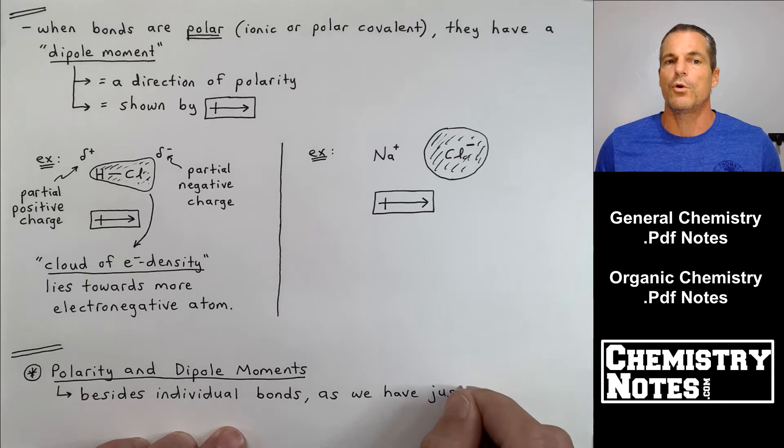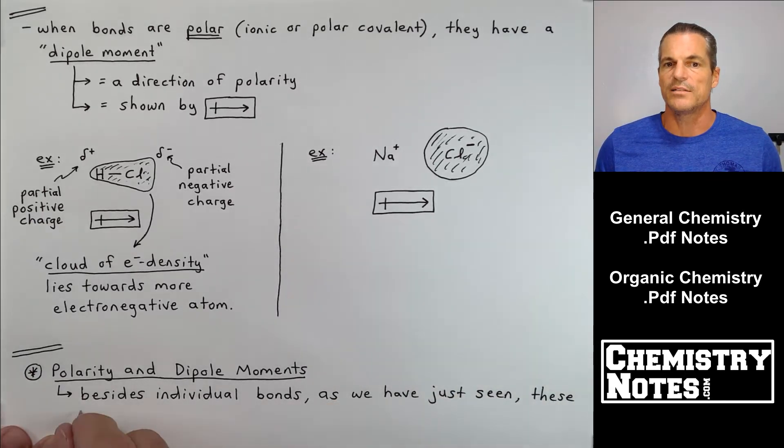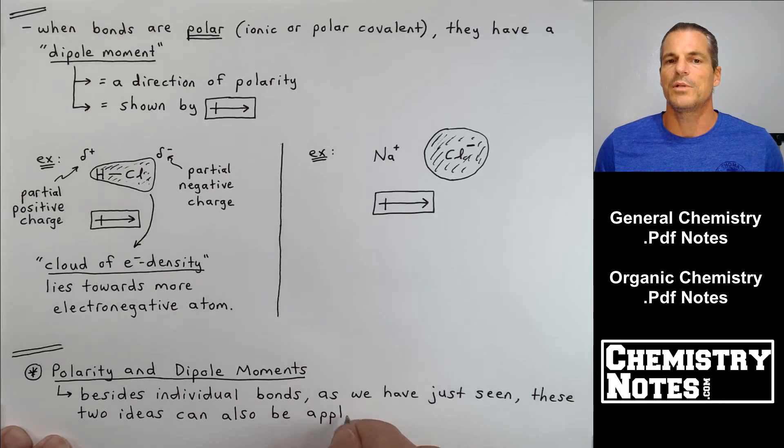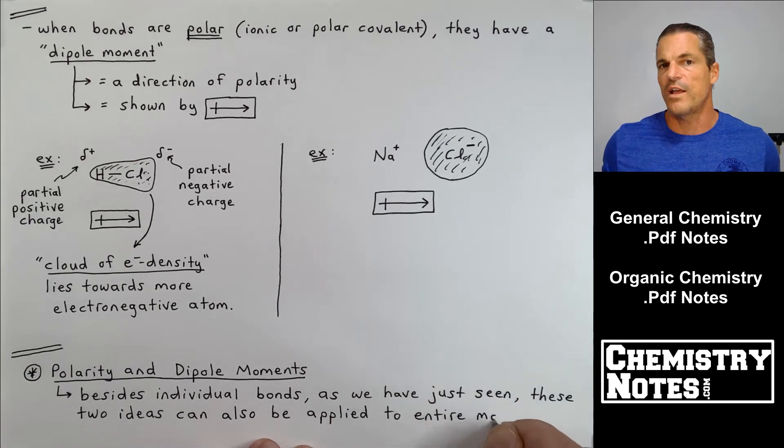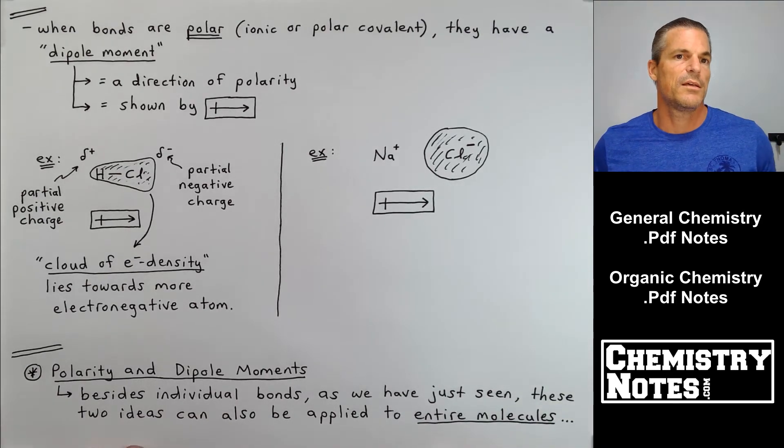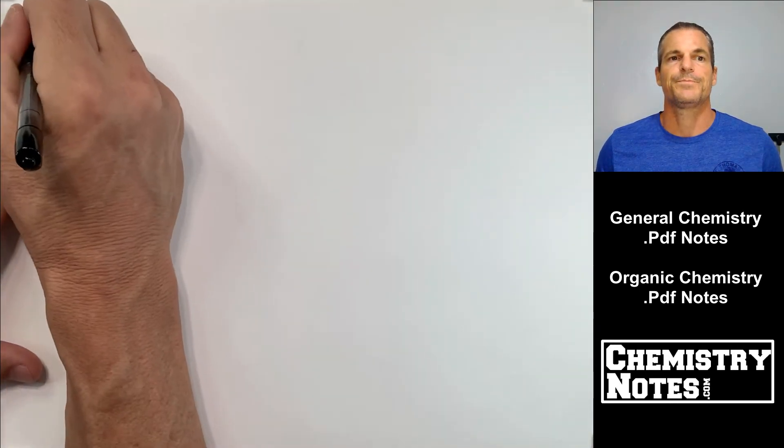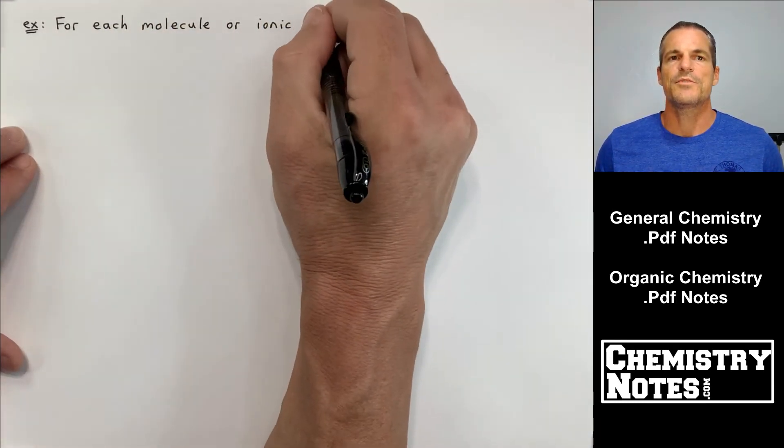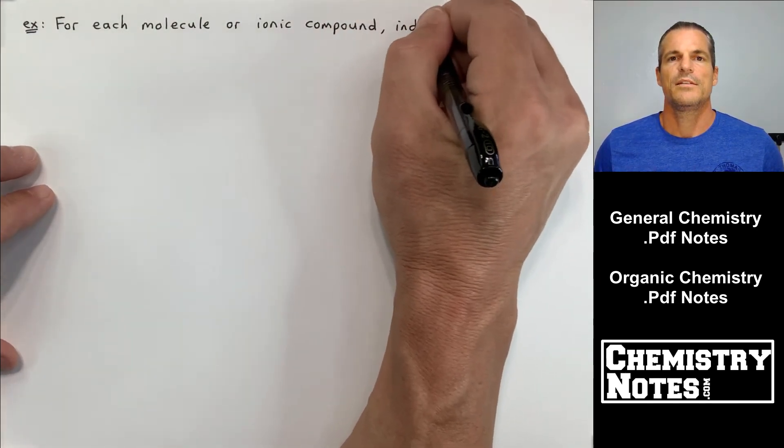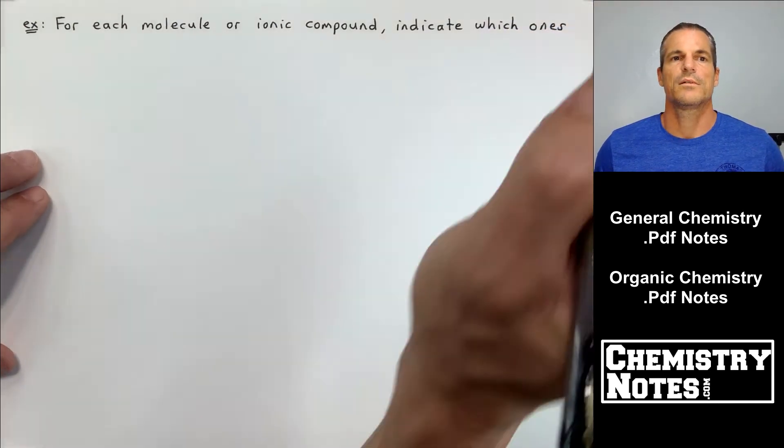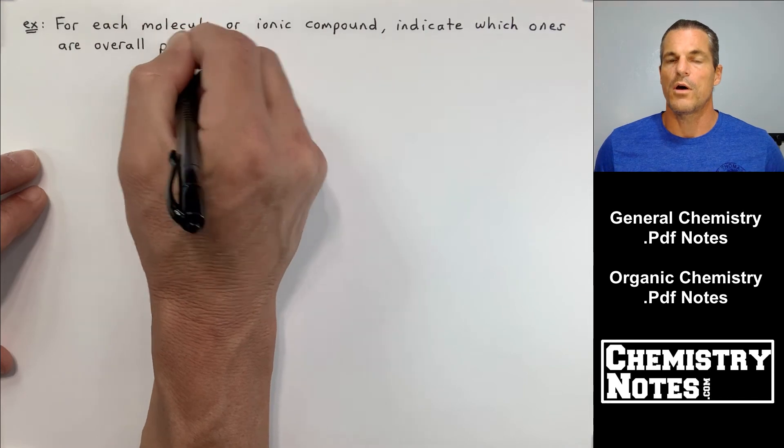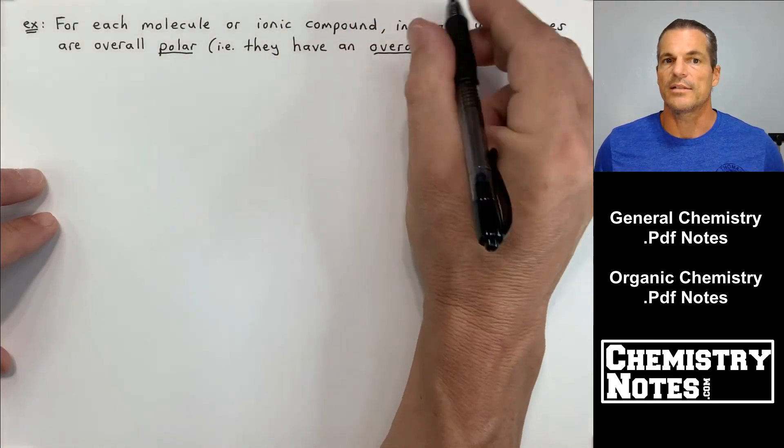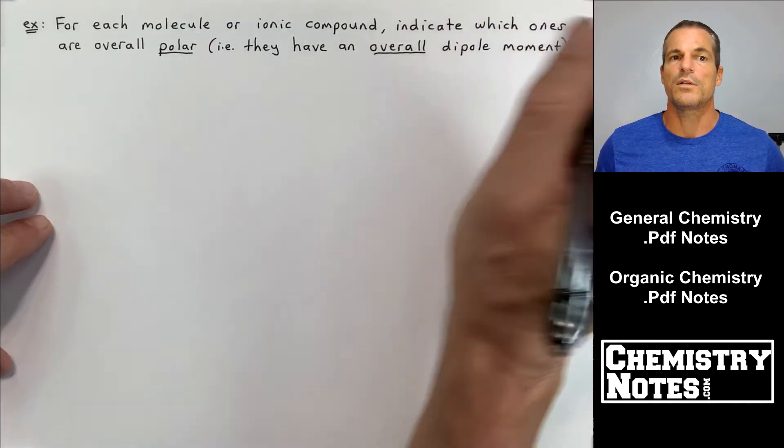Next part I want to talk about is polarity and dipole moments. I've already mentioned that with individual bonds, as we just saw, but these two ideas, polarity and dipole moments, can also be applied to the entire molecule in the case of a covalent compound and to an entire formula unit in the case that it's an ionic compound we're talking about.